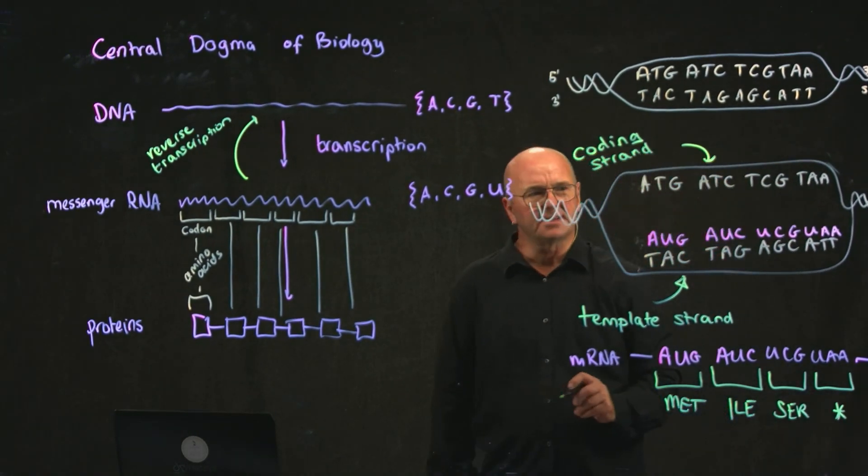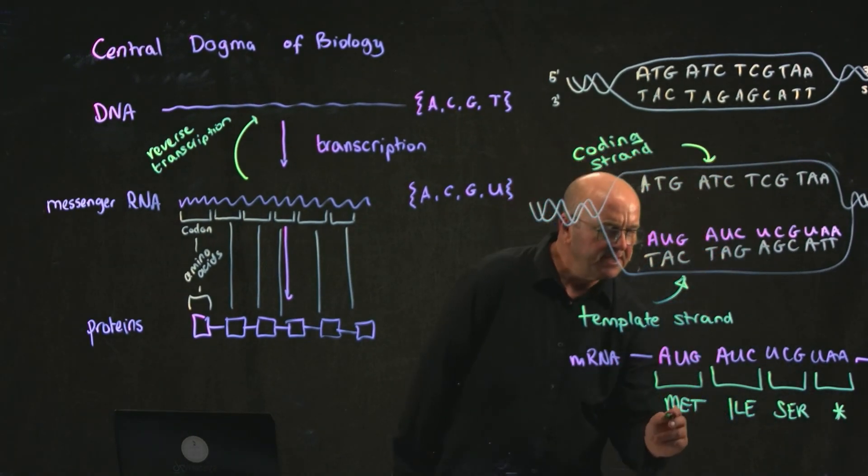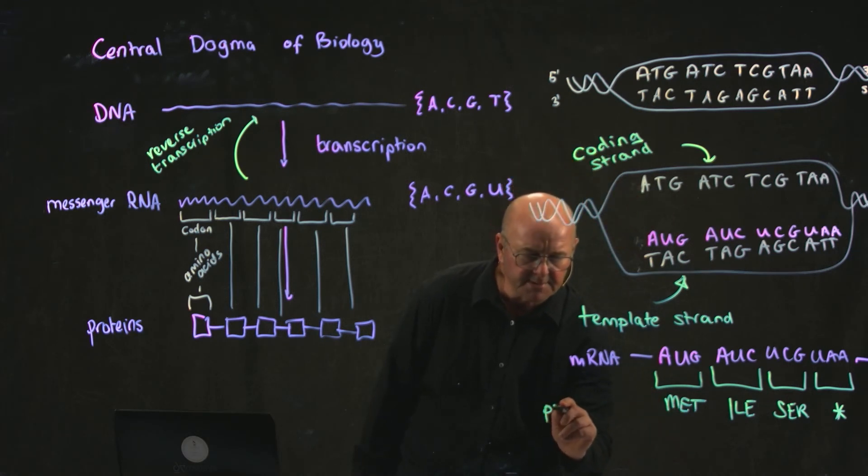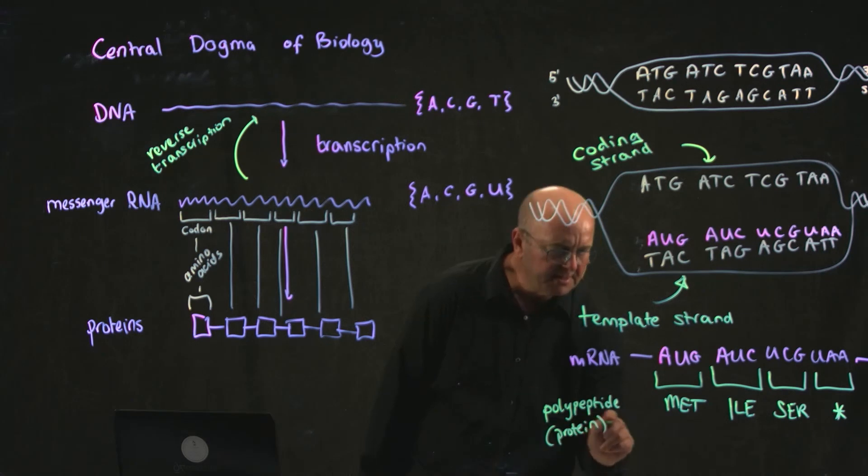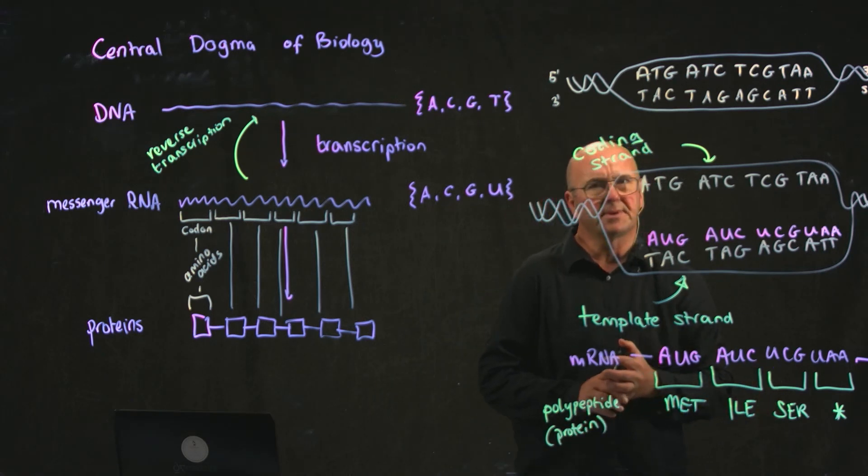And so if this were our sequence and this were really happening, we would have a very short, what we call in this case a polypeptide, but you could also call it a protein. This particular protein only has three amino acids on the stop.